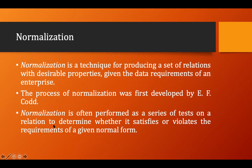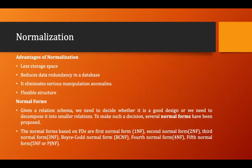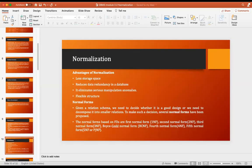Normalization is performed as a series of tests on a table. If a test fails, we go through the normalization process — splitting the table in such a way that we achieve the desired normal form. Based on which normal form we want, we test and if it fails we decompose accordingly. That whole process is called normalization.